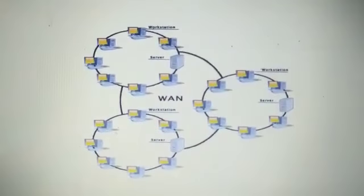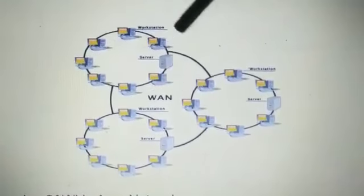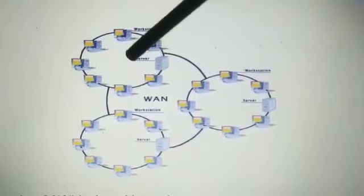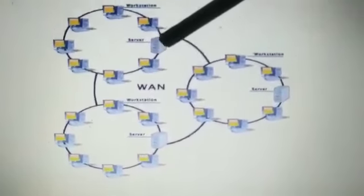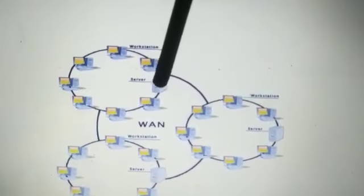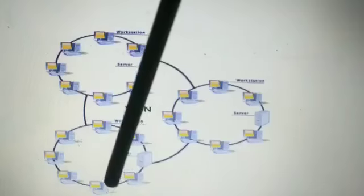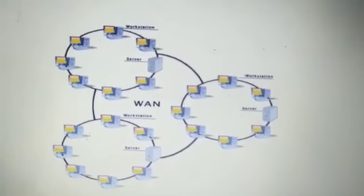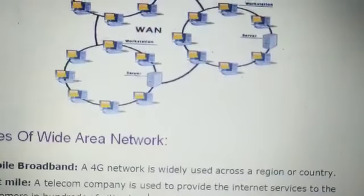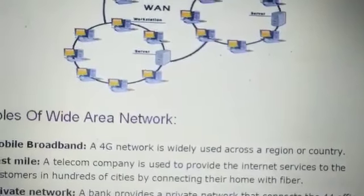Looking at this system, it can act as a workstation — here is a server and here are different workstations. It may also act like a MAN network, and then by connecting these together it becomes the WAN. Now let's quickly go through some examples of the wide area network.